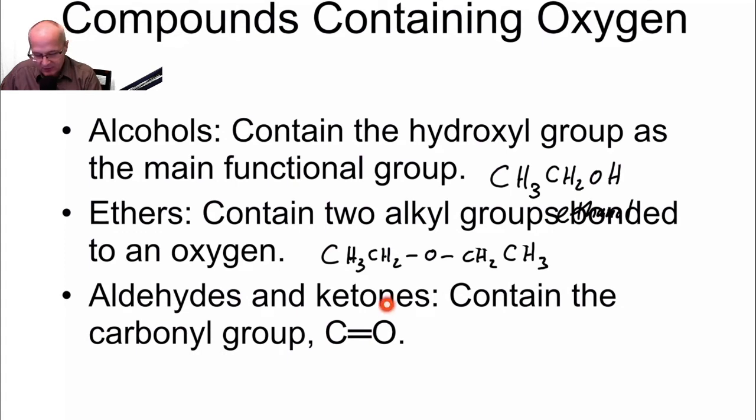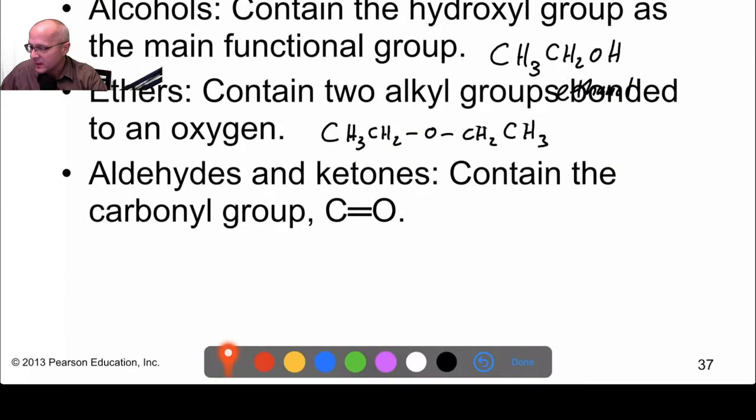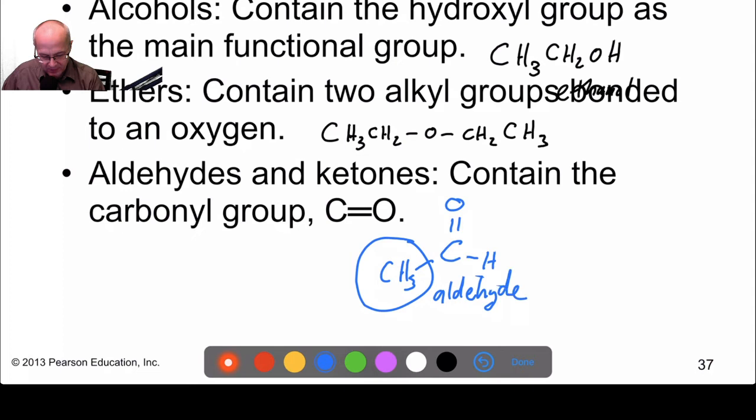Aldehydes and ketones. Now, here are the first examples of carbonyl-containing compounds. The first one, aldehyde. Aldehyde has a carbonyl directly bonded to an H. So, the carbon of the carbonyl is directly bonded to a hydrogen. Has to have that or it's not aldehyde. It's something else. And then let's put a CH3 here. Now, this could be damn near anything. It just has to be a carbon group. That's aldehyde.